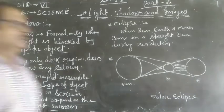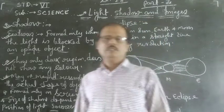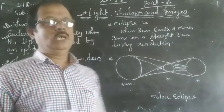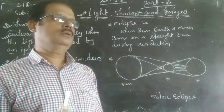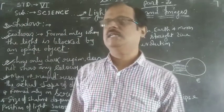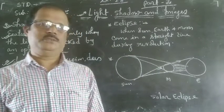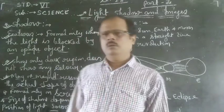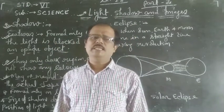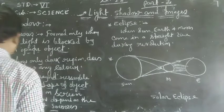It means shadow may be the same size as the opaque object, or it may be larger or smaller than the real object. So the size of the shadow varies every time, depending on conditions.